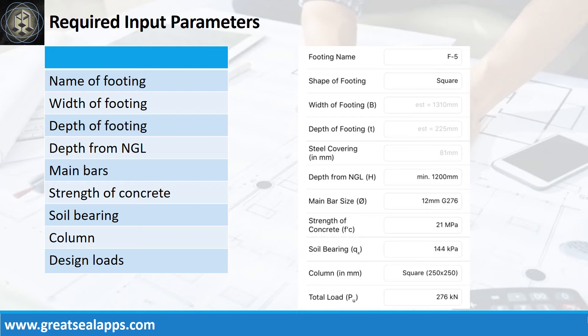Strength of concrete, 21 MPa; soil bearing capacity, 144 kPa; column, 250mm by 250mm; and factored load, 276 kN.